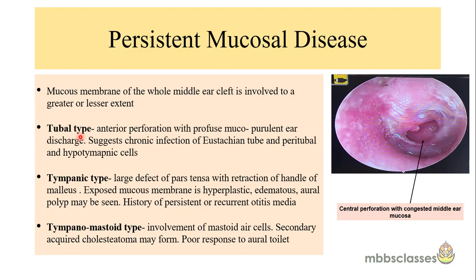In the tubal type, the perforation is seen in the anterior part — the anterior mesotympanum in correlation with the eustachian tube — with profuse mucopurulent discharge. This suggests chronic infection of the eustachian tube and peritubal and hypotympanic cells. Whenever we get discharge with a perforation in the anterior part, we have to look for disease in the adenoids, suggesting infection transmitted through the eustachian tube.